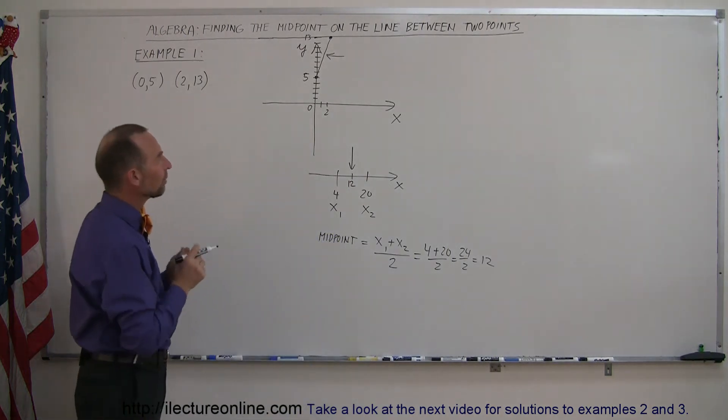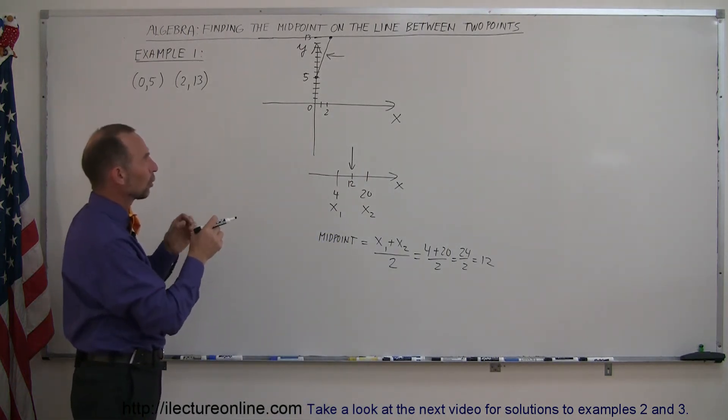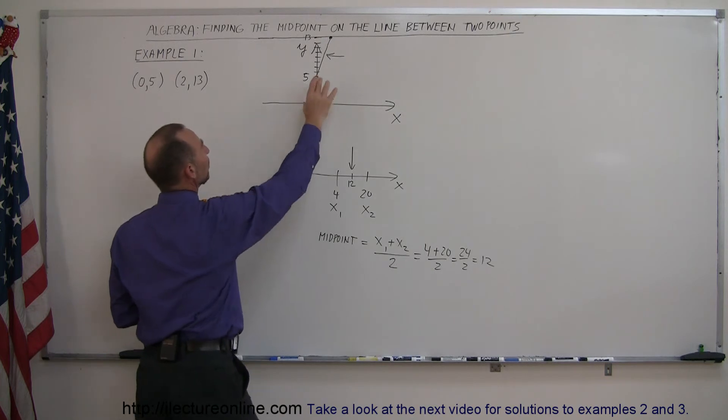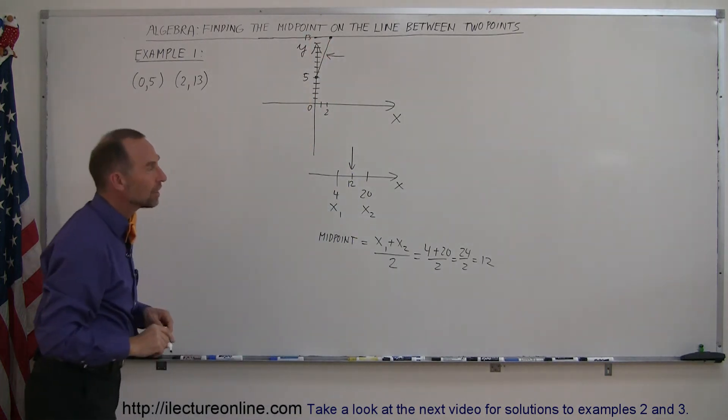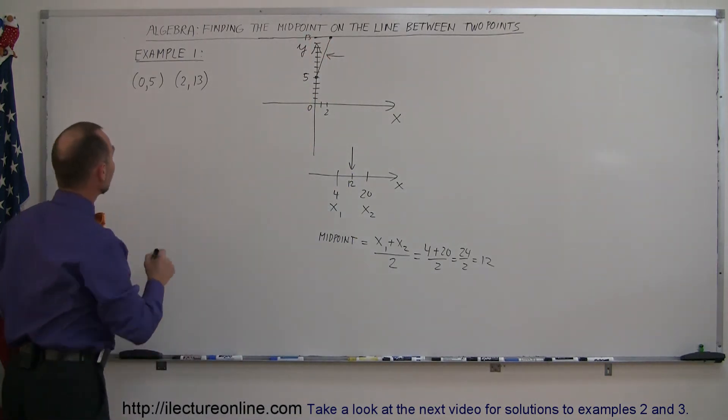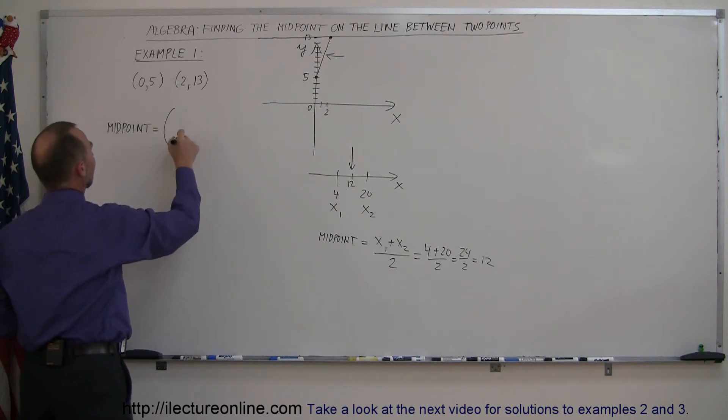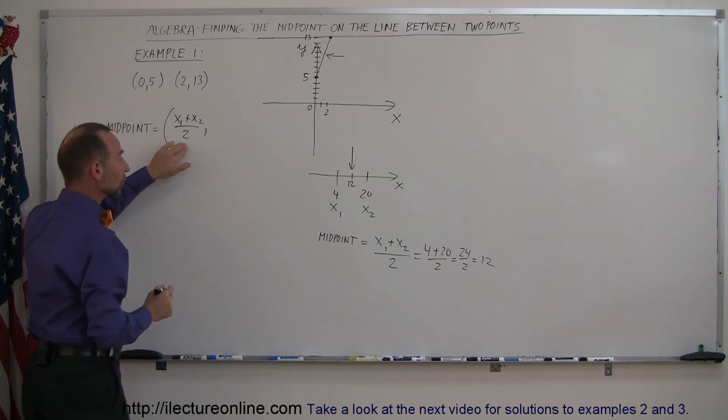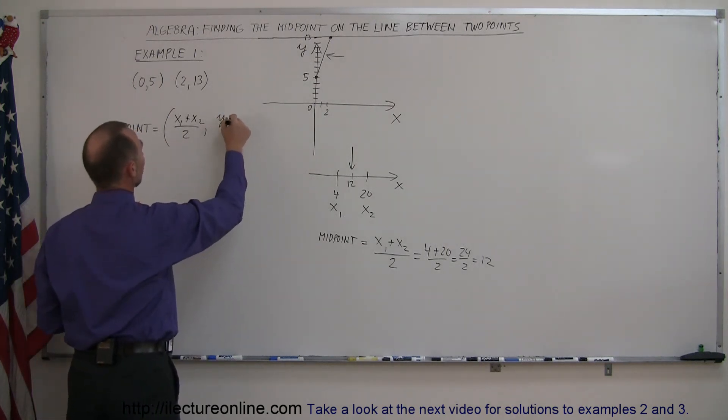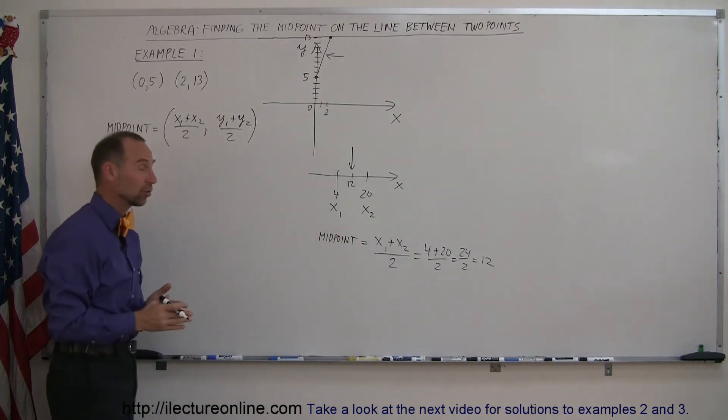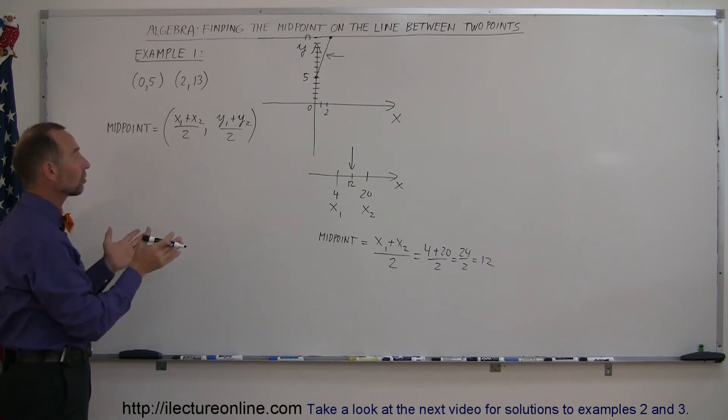So if you're going to find the midpoint between two points on the xy plane, what you do is you find the midpoint between the two x values of the two points, and the midpoint between the y values of the two points. And so that means that the midpoint can be found by taking x1 plus x2 divided by 2, and making that the x-coordinate of the midpoint, and then taking y1 plus y2 divided by 2, and making that the y-coordinate of the midpoint. Just like we did here, in the x-direction, we do the same in both directions, and that will give us the coordinates of the midpoint between those two points.